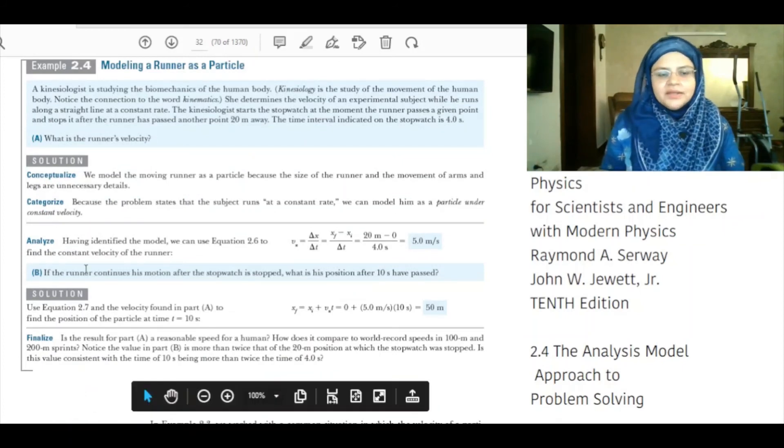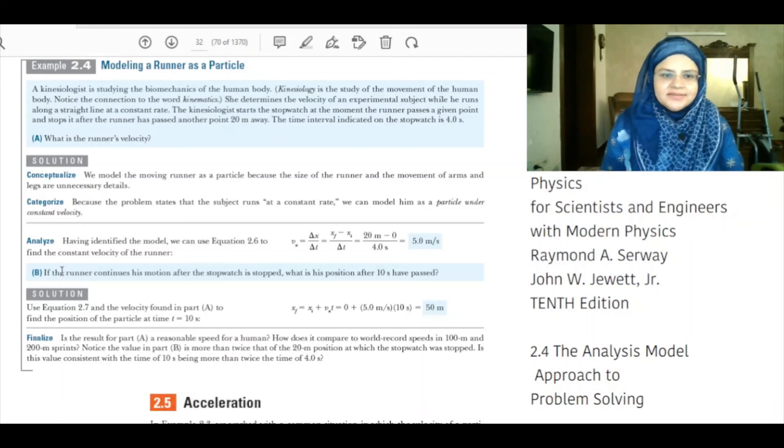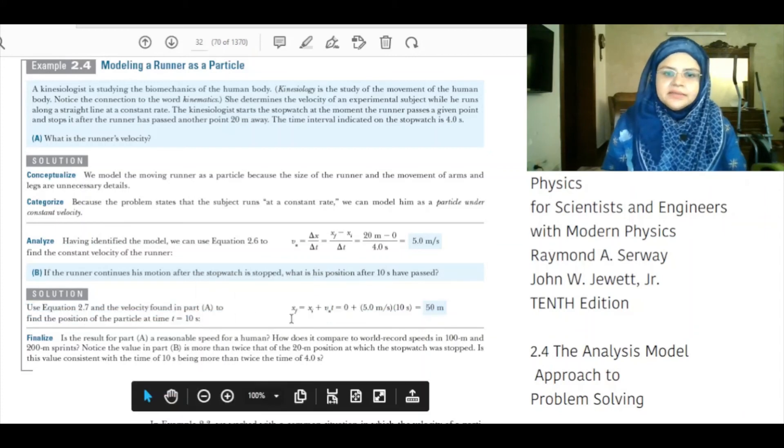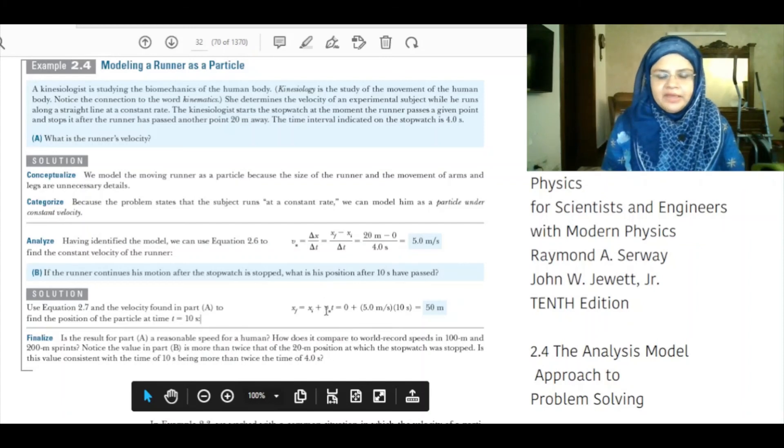Part B: If the runner continues his motion after the stopwatch is stopped, what is his position after 10 seconds have passed? Solution: Use equation 2.7 and the velocity found in part A to find the position of the particle at time t is equal to 10 seconds. X_f, that is the final displacement, is equal to x_i plus V_x times t. X_i, the initial displacement, is 0. V_x we have calculated in part A to be 5 meters per second. The time interval that we are considering is 10 seconds. Therefore, x_f is equal to 0 plus 5 meters per second times 10 seconds giving us the final displacement of 50 meters.